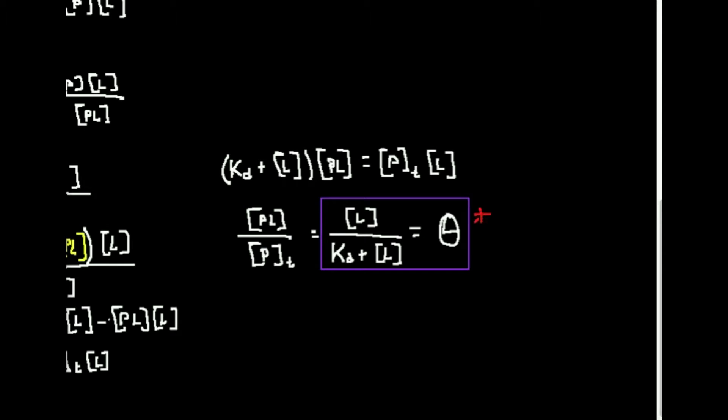This is a formula that, when you first start to talk about protein binding to ligands, is commonly seen in your book. It says that theta is equal to the concentration of L divided by the sum of KD and the concentration of L. This formula is actually really useful when you have proteins that have lots of binding sites, and you'd like to know how many of the binding sites are occupied, or what ligand concentration produces a certain binding percentage. We also want to know where it comes from, so we're going to derive this expression.